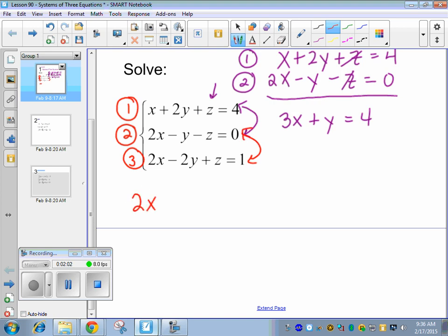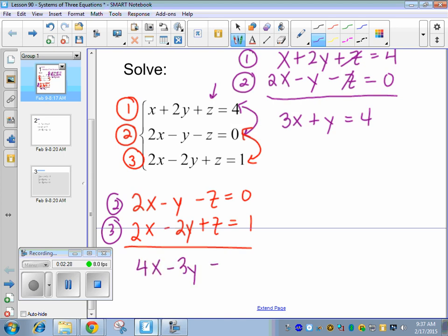And so just to show you, I'm going to rewrite. And you may have to actually multiply by something to do this step, but this one was set up nicely for us, where you guys picked the right variable, and it's an easy one to cancel. So now I'm going to use equations two and three, and I'm going to cancel the z's again. So I get 4x, negative 3y. Z's cancel, and I get 1.